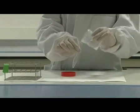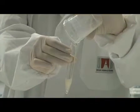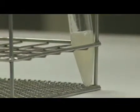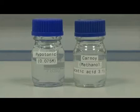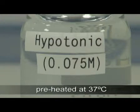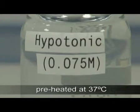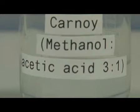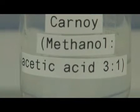To begin the protocol, the sample must be transferred to a centrifuge tube. The solutions we are going to use in the first part of the experiment are hypertonic, preheated at 37 degrees C and methanol acetic acid in the proportion of 3 to 1. These must be freshly prepared.